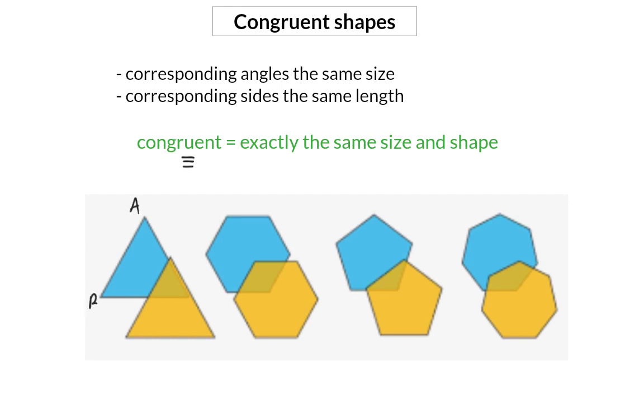So in the example of the two triangles here, triangle ABC and triangle DEF, I can write down that triangle ABC is congruent to triangle DEF.